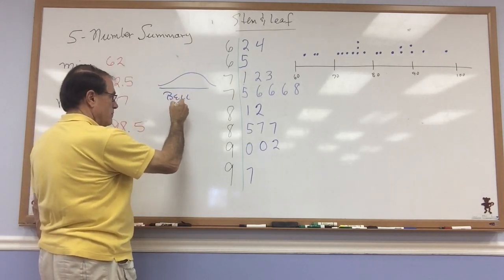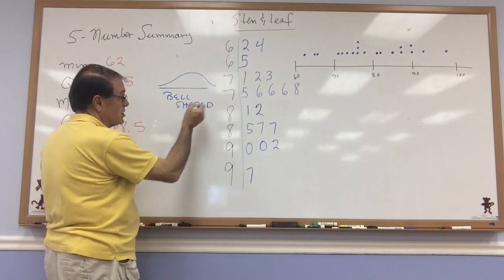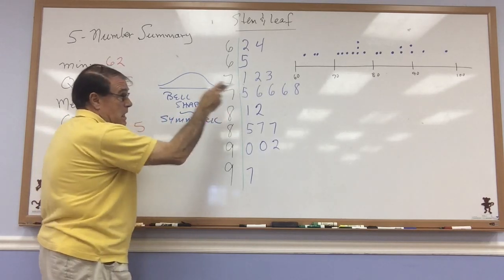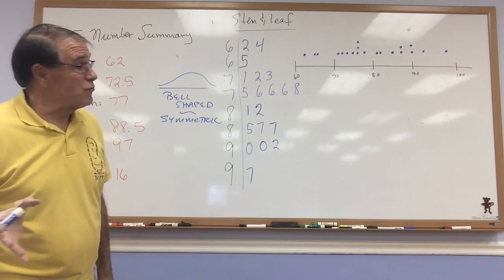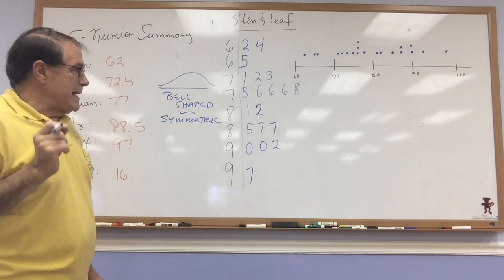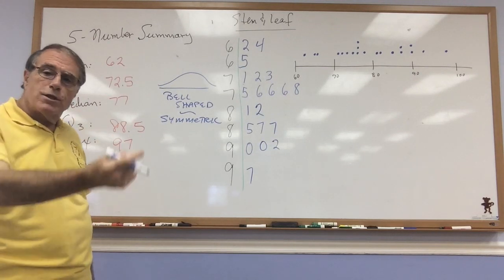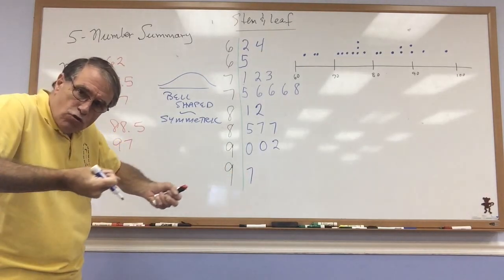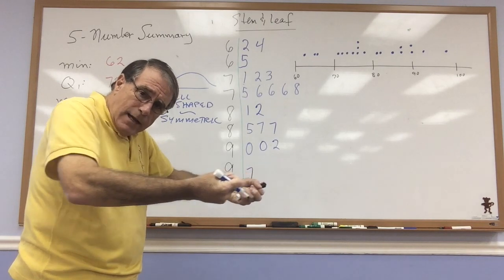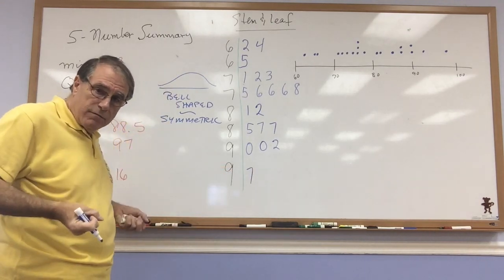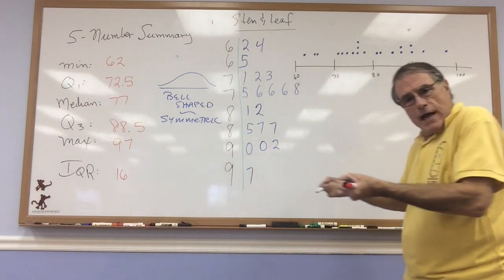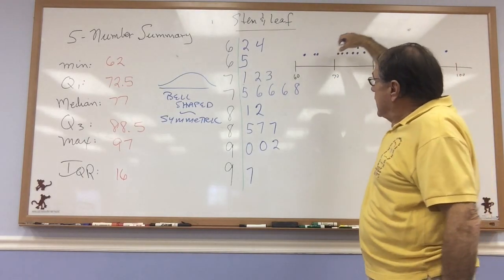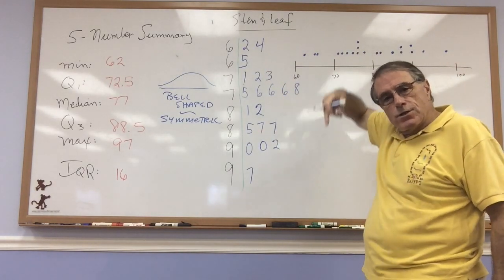This is bell-shaped. Bell-shaped is also called symmetric. And this data is neither bell-shaped nor symmetric. This data is skewed. Now skewed data is either skewed to the left or skewed to the right. Left or right depends on which side appears to be stretched out. So if it's stretched out to the left, we say it is skewed to the left. Looking at this data, I would be inclined to believe it is skewed to the left.